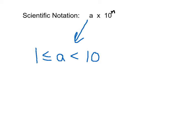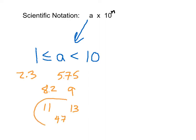Some examples of valid numbers for A: we could have 2.3, 5.75, 8.2, or 9. Notice all these numbers have one single numeral in the ones place, and that's it. Some numbers we cannot use: you cannot have 11, 13, or 47 in the place of A, because they have two different place values — the tens place and the ones place. The first digit in A should be in the ones place only.